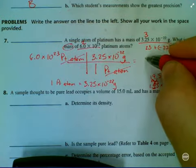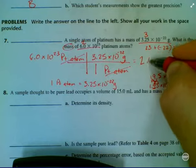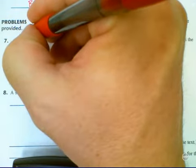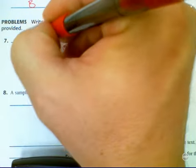So what I'm going to report as my final answer is 2.0 times 10 to the second grams. So let's write this in: 2.0 times 10 to the second grams.